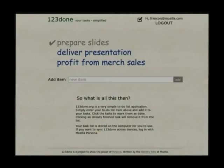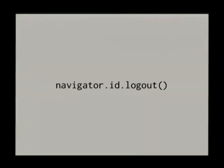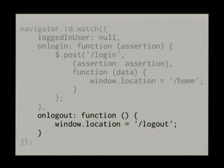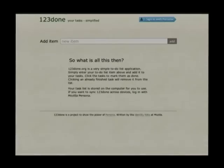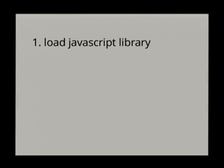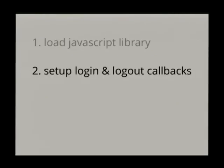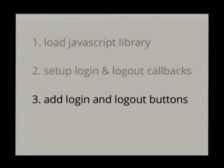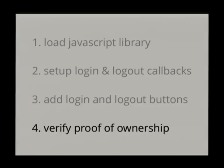We're logged in. When the user clicks logout, you call navigator.id.logout with no parameters — that triggers the logout callback, and your site does whatever is necessary to log the user out. To recap: load the external JavaScript, set up login and logout callbacks, handle backend verification, add your buttons and hook them up to request or logout. The full implementation of a Persona-enabled site is very simple — a PHP example that uses no external libraries except curl shows just how straightforward it is.